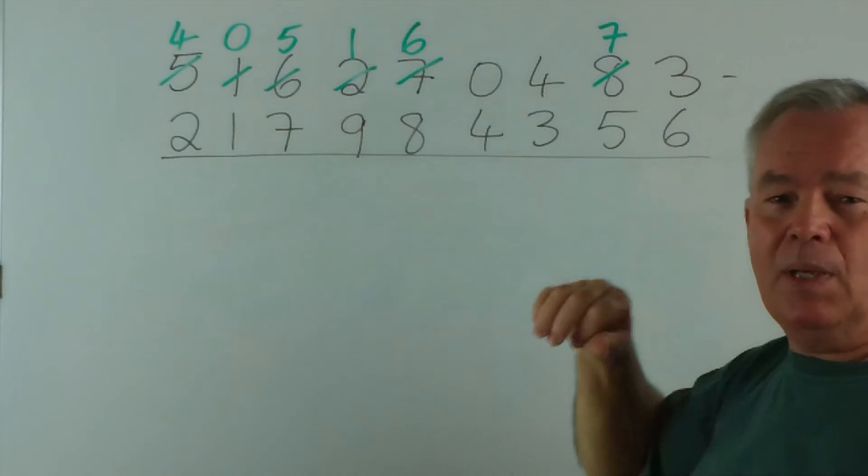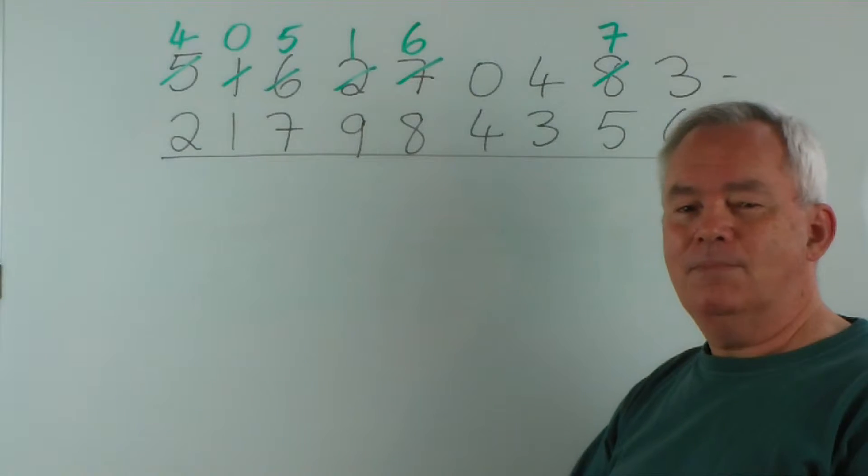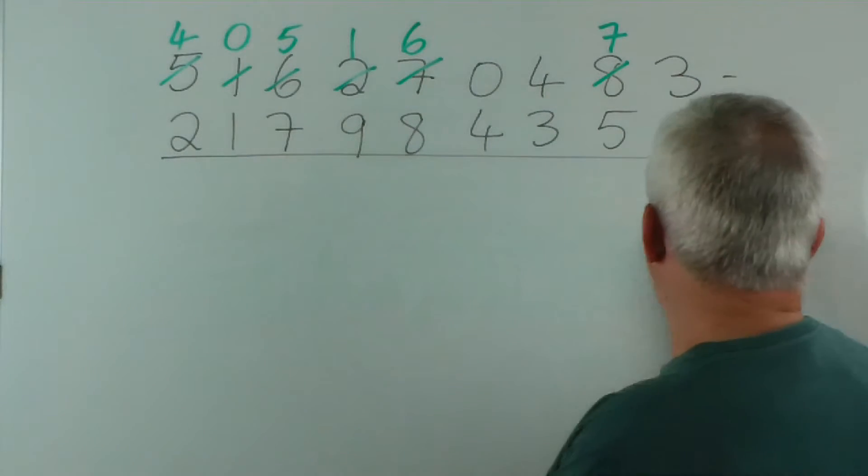How far are 6 and 3 apart? They're 3. The difference is 3. 3 from 10 is 7.